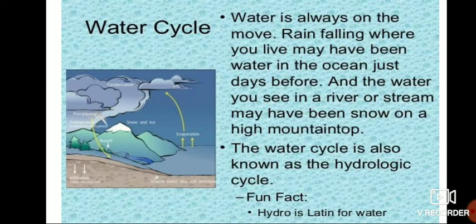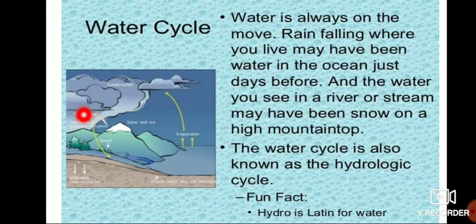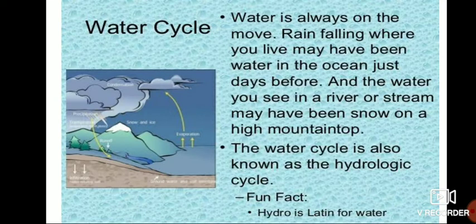First: the water cycle. Water is always on the move. Rain falling where you live may have been water in the ocean just days before. The water you see in a river or stream may have been snow on a high mountain top. The water cycle is also known as the hydrologic cycle — 'hydro' is a Latin word for water.